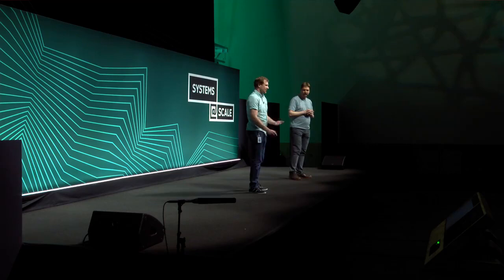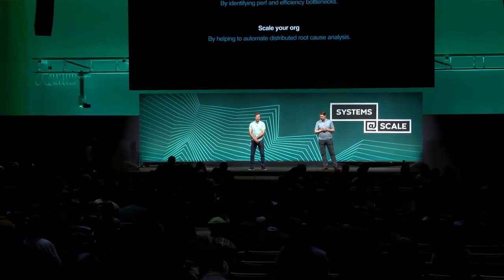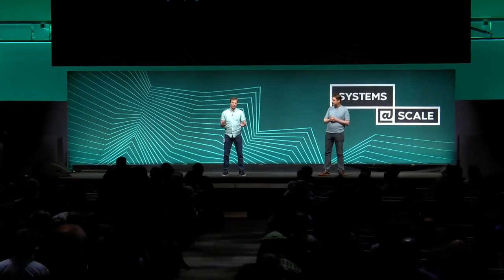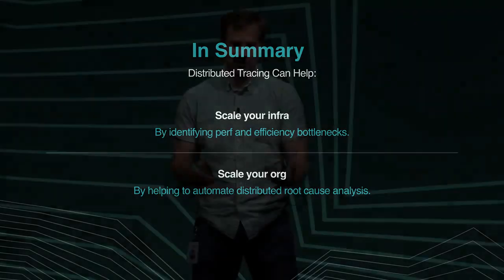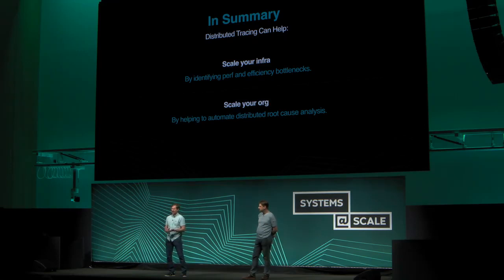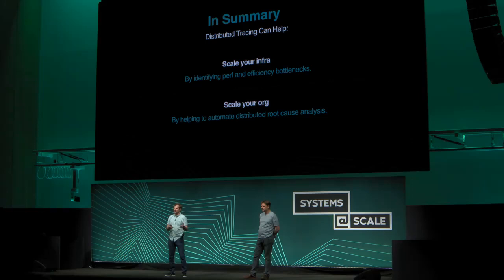So to summarize: distributed tracing can really help you scale both your engineering organization — especially with microservices, finding the root cause of something quickly, two minutes instead of 30 — and knock out performance and efficiency bottlenecks. Those are two big ways you can use tracing to scale. In order to get the benefits, you need really robust instrumentation, and you need to be able to work with sets of traces and produce aggregates representing a baseline of a performing system, or a system before and after a change.